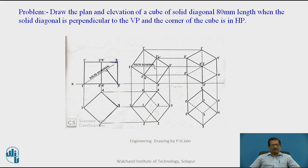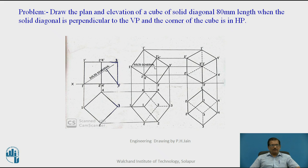Here the length of the diagonal is given as 80 mm. So how will you calculate the base edges? The formula is: length of solid diagonal = √3 × base side. This is the formula you have to remember if you are attempting a problem related to solid diagonal. So, solid diagonal = √3 × base edge length.